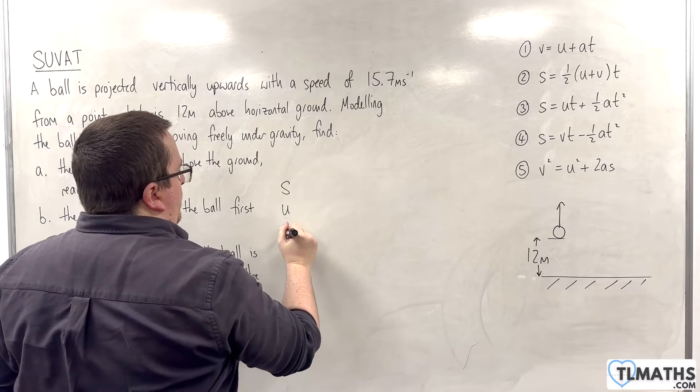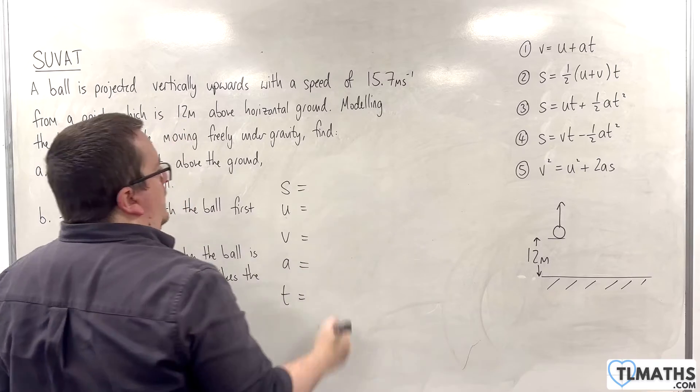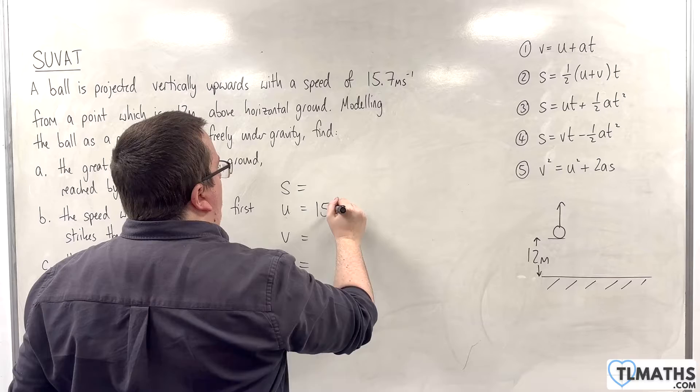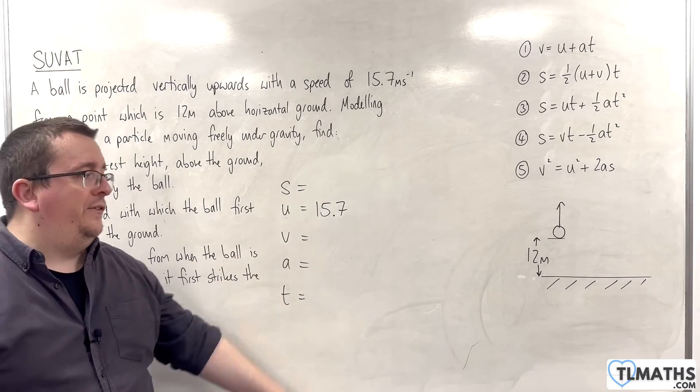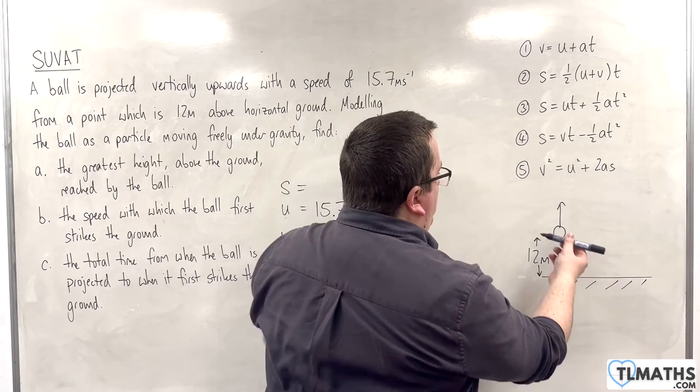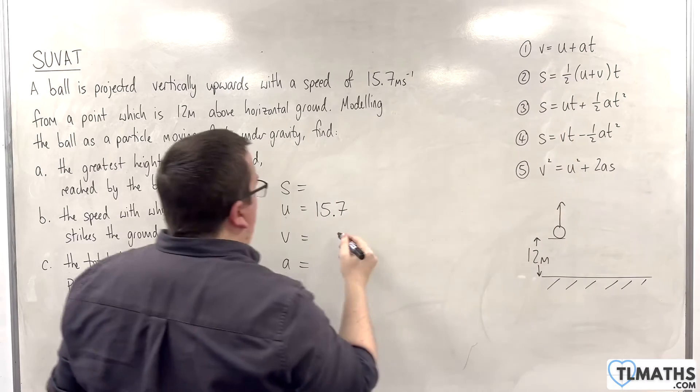So, SUVAT. Let's go straight into SUVAT. Now, it's projected with a speed of 15.7 metres per second. So, the initial velocity U is 15.7. We're going to take upwards as positive. When it reaches its maximum height, the velocity will be zero at that point.